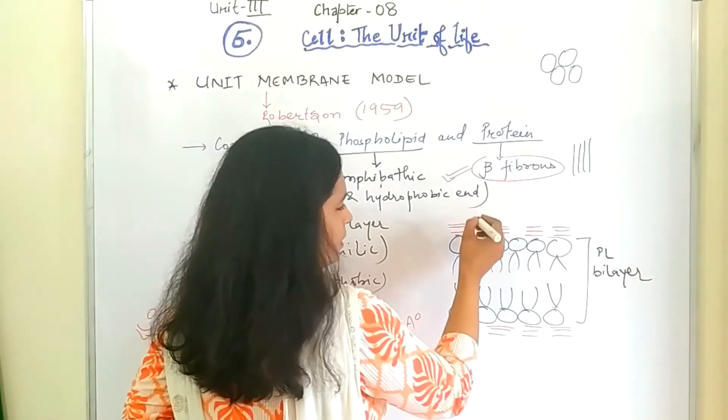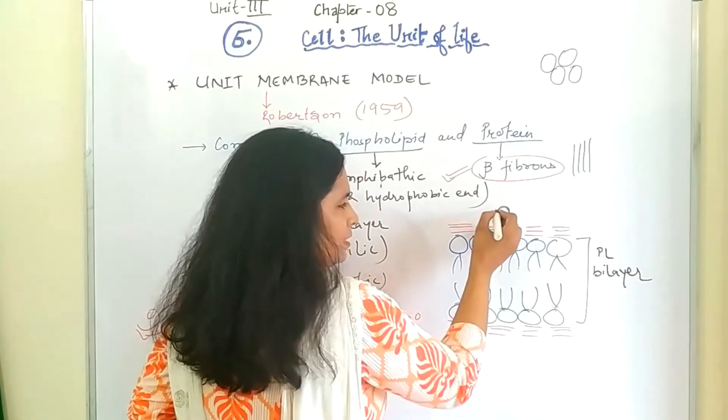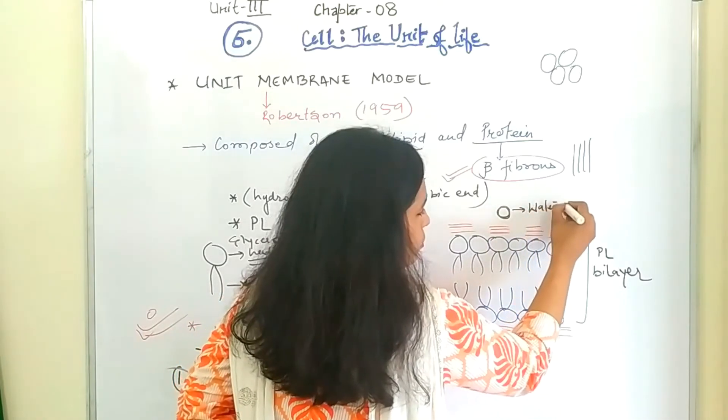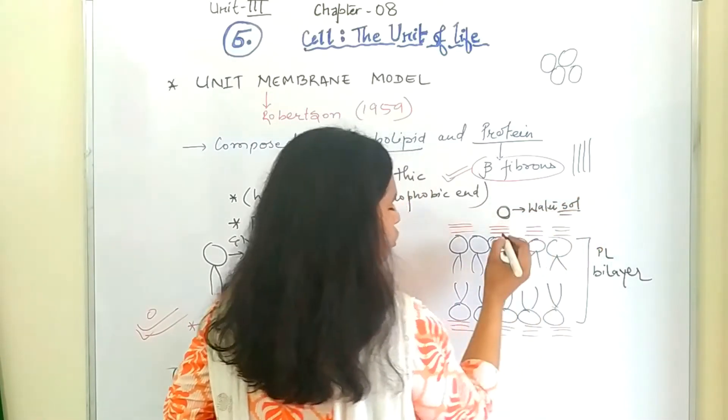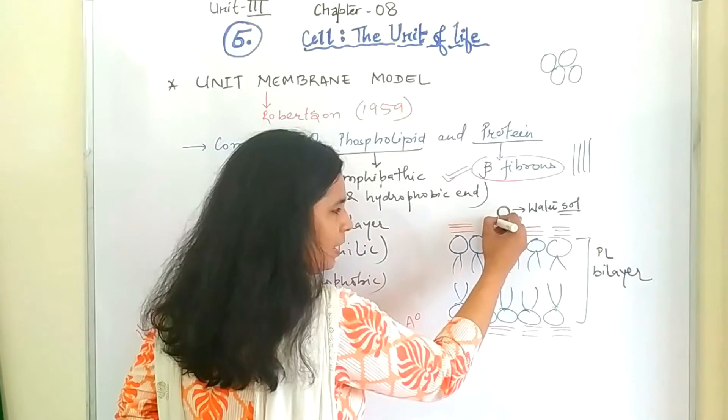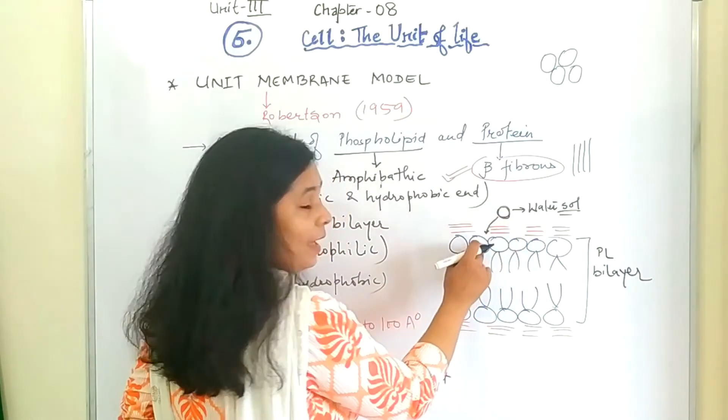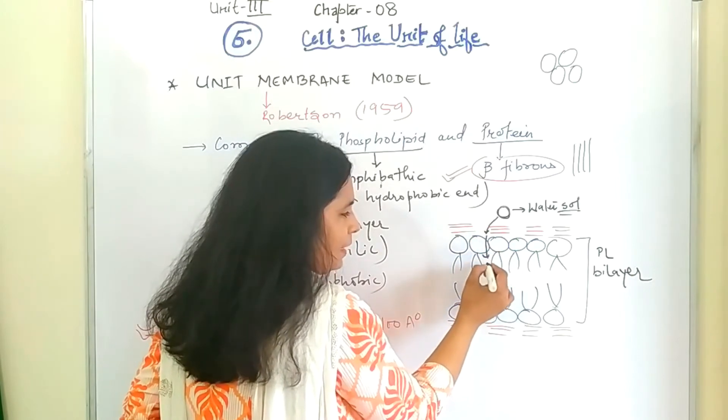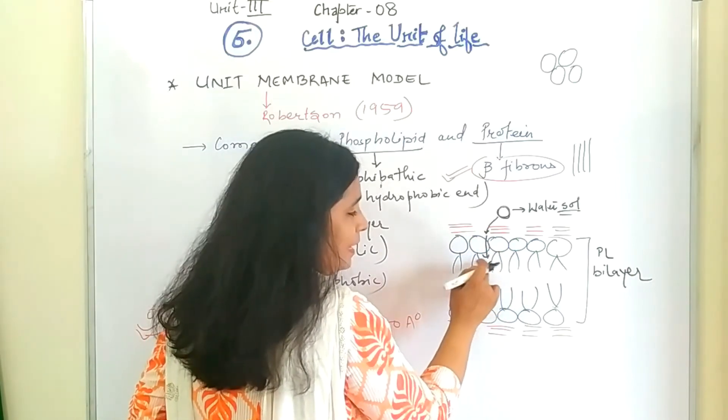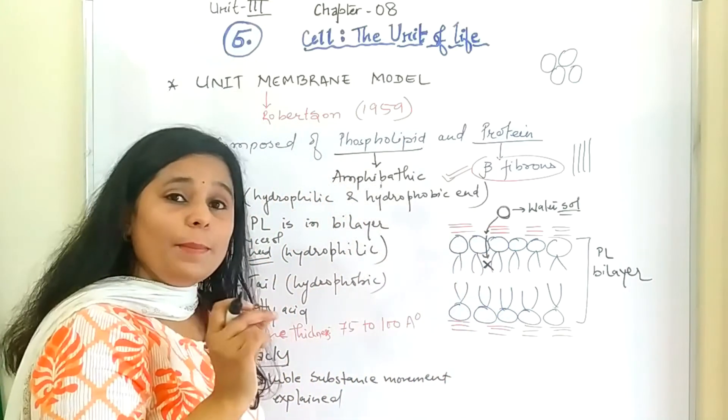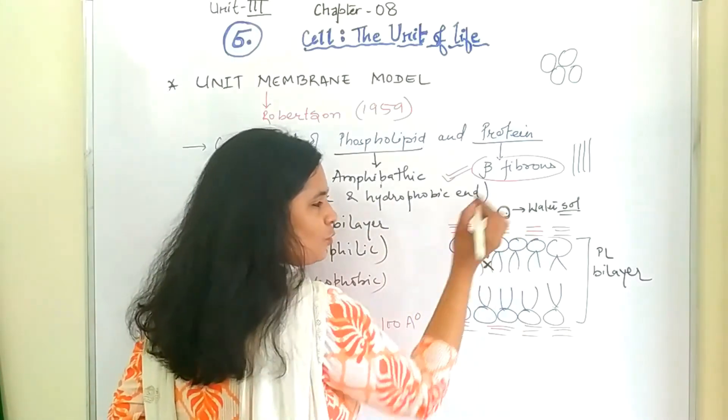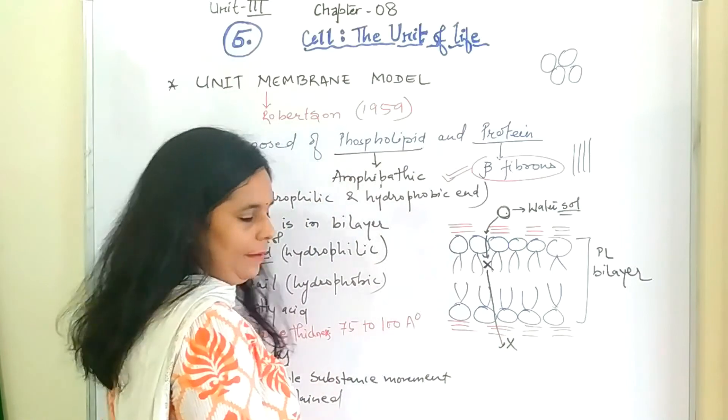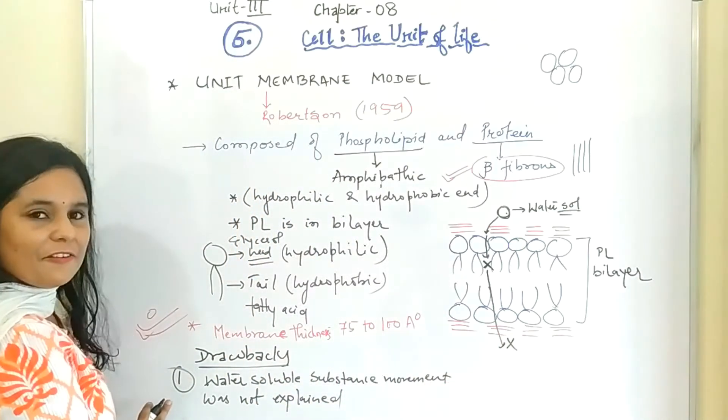If there is some molecule here, so this molecule is water-soluble. So what will happen? Protein will allow it. Then hydrophilic head will also allow it. Again, difficulty comes here when these tail, which is hydrophobic tail, they won't allow this water-soluble molecule to cross through the membrane. So this was his first drawback.